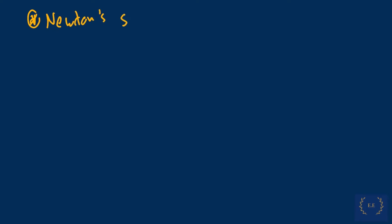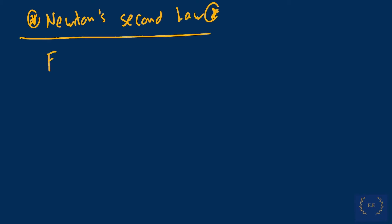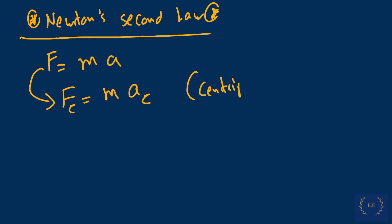Since we have an acceleration, we're going to be under the influence of Newton's second law, which is F equals ma — the net force is the result of mass multiplied by acceleration. Since we have a centripetal acceleration, we're going to have what we call the centripetal force: F_c equals the mass multiplied by the centripetal acceleration. This is the same formula but applied to the specific case of uniform circular motion.